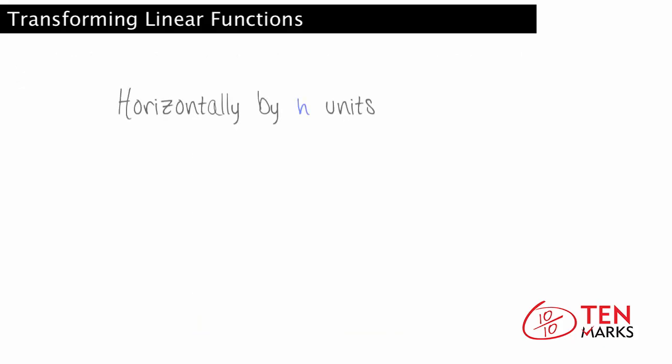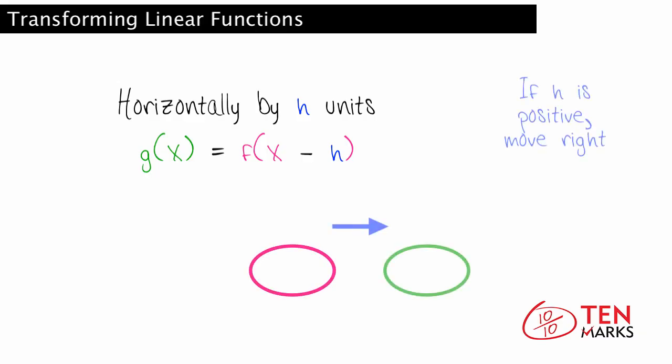Now let's say that a function is translated horizontally by h units. h is subtracted from the input value x. Your original is f, and the translated function is g equals f of x minus h. If h is positive, the graph moves right by h units. If h is negative, it moves left by h units.